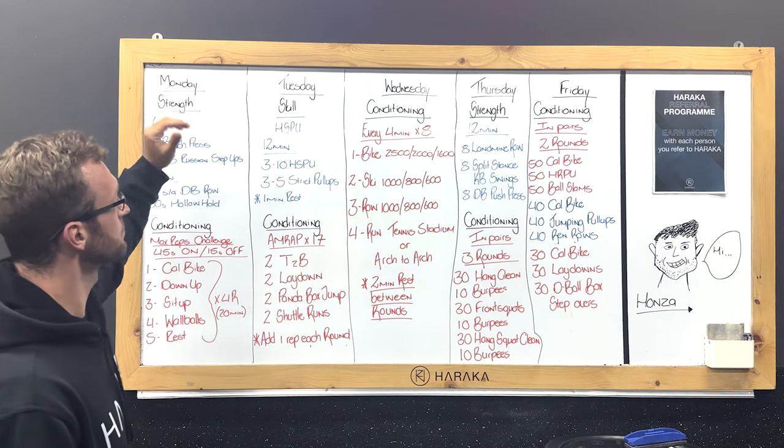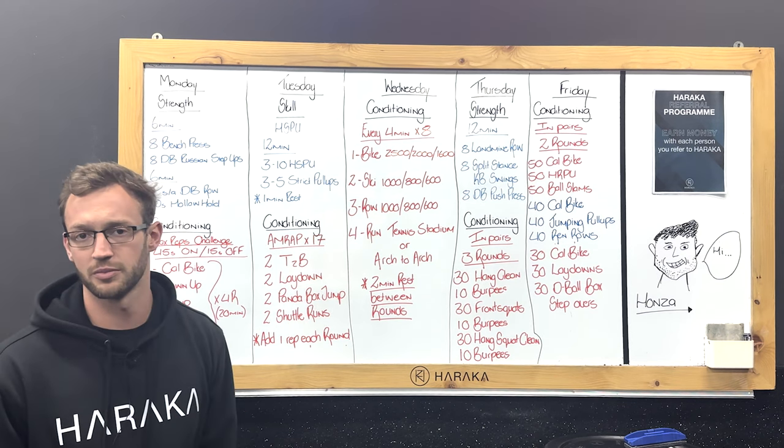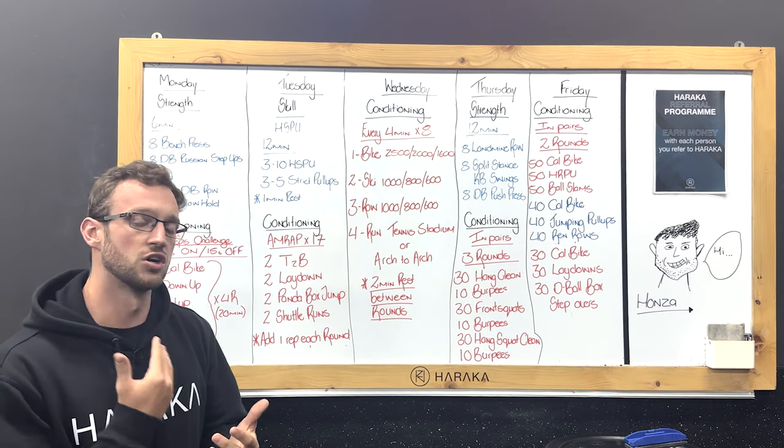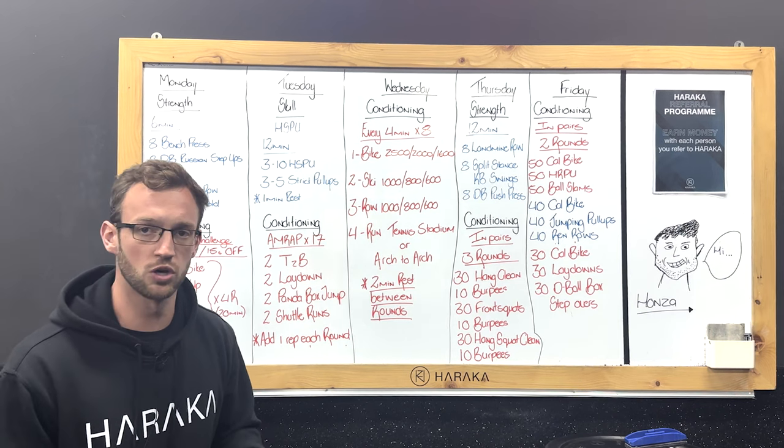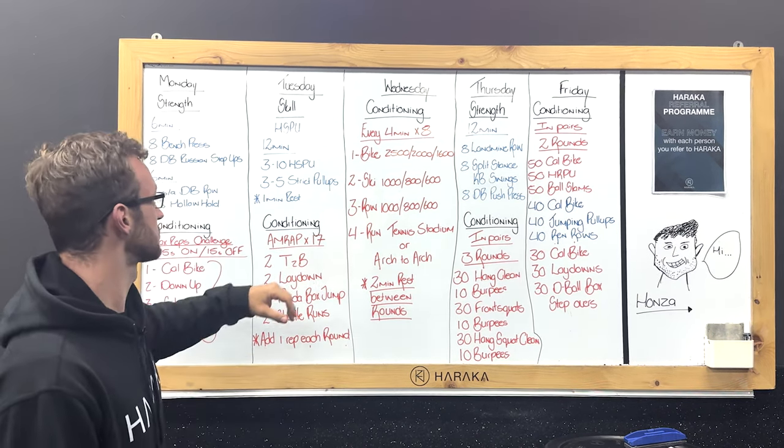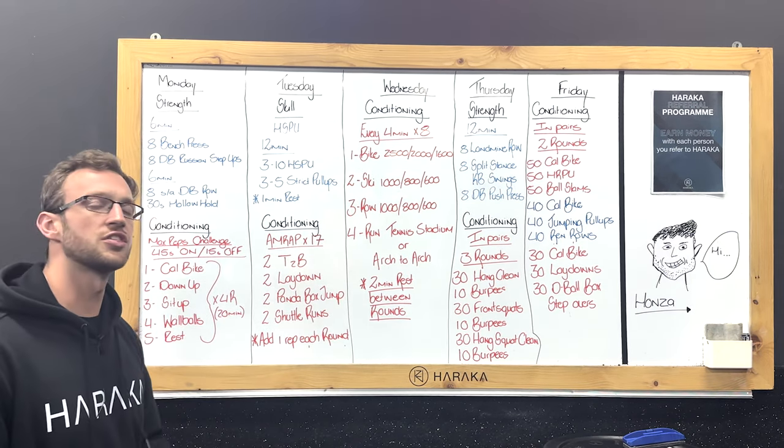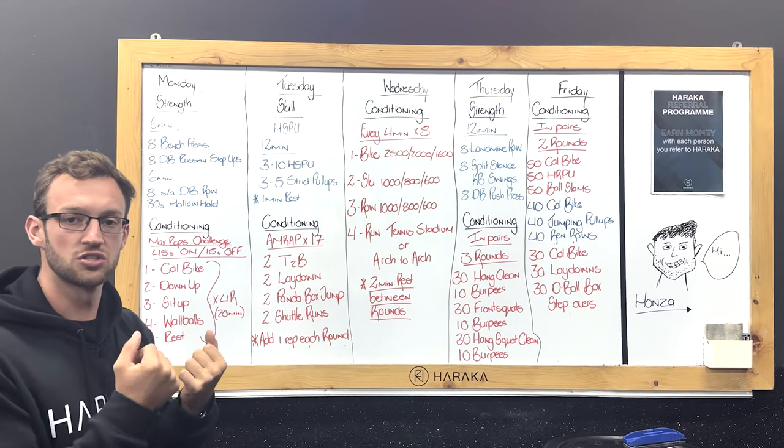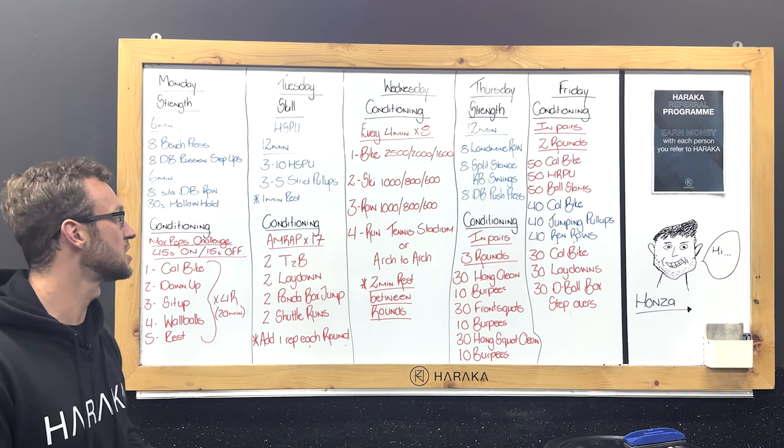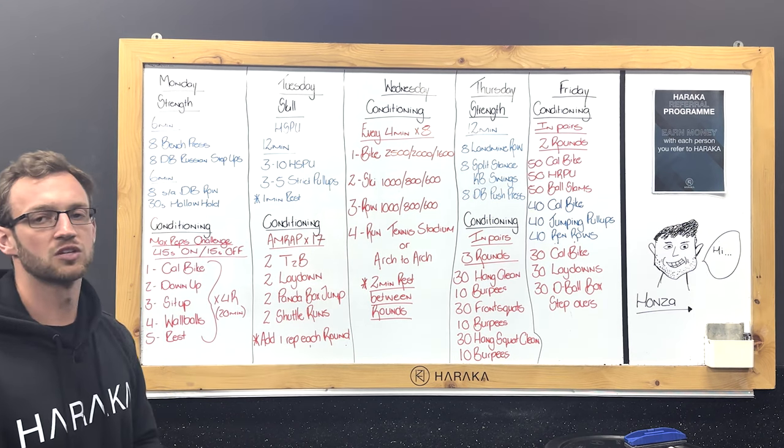Then for Tuesday we've been working on our skills, a lot of handstand holds and so on. This week we're going to mix it up a little bit for those of you that want to try those handstand push-ups. We'll work on those and have a 12 minute window where we're going to give you some time to practice them. Three to ten handstand push-ups for your first one and then three to five strict pull-ups to combine that with a nice pulling exercise. After one set you're going to rest one minute to recover so we can start our next set.